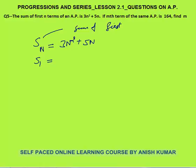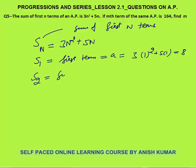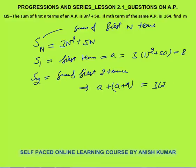Put n = 1: S₁ = 3×1² + 5×1 = 3 + 5 = 8, so a = 8. Now calculate S₂ (sum of first two terms): put n = 2, giving 3×4 + 5×2 = 12 + 10 = 22. The sum of first two terms equals 2a + d.